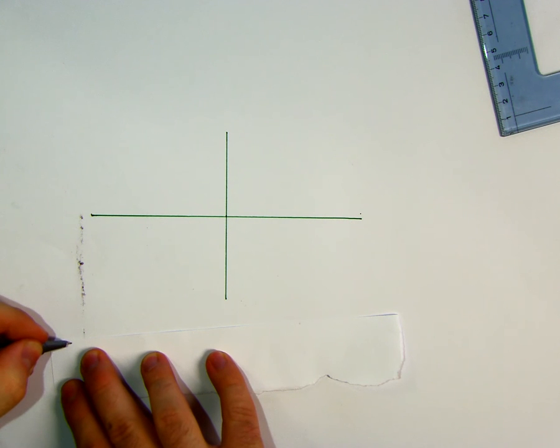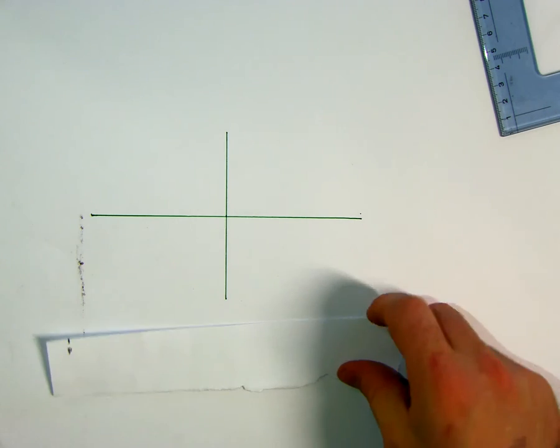First thing we need to do is pick a point, a reference point to work from on our slip of paper, and we'll call it point P.